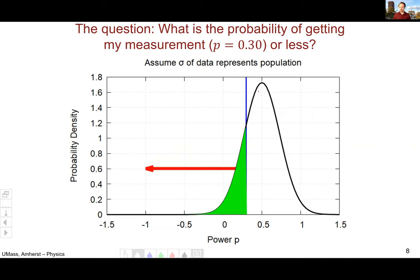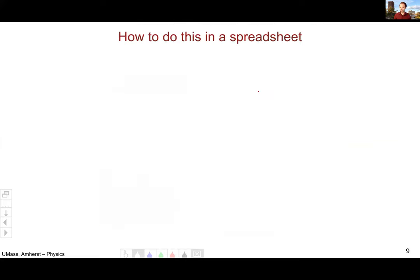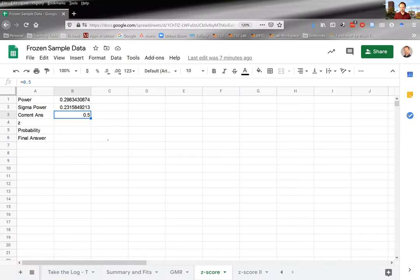Back in the olden times, you had to calculate z and then you looked it up in some big table in some book. But we fortunately live in the 21st century. And so we can do this directly within our spreadsheets. So I'm going to open up an example spreadsheet so we can see what we do. The first step is I'm going to calculate z. And that is our measurement minus our mean divided by our uncertainty, our standard deviation.